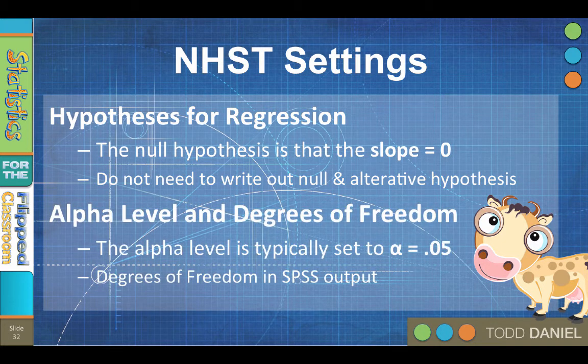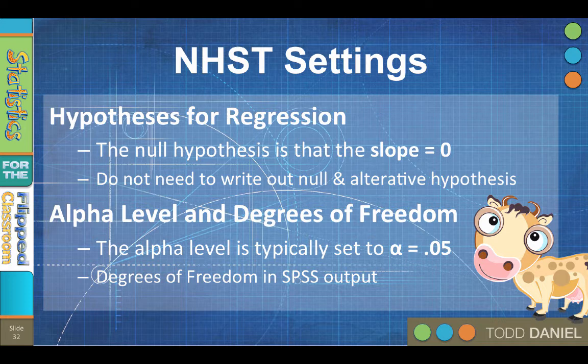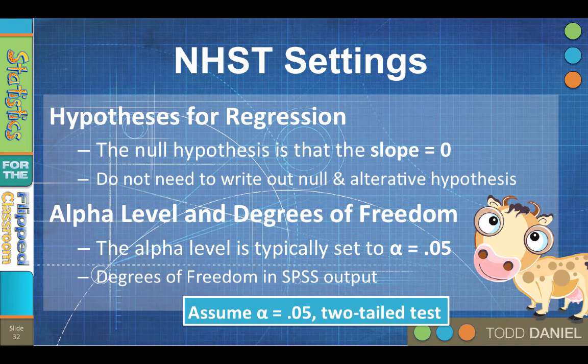The alpha level is typically set to 0.05, but it can be 0.01 or any other level that is chosen by you, the researcher. The regression model will be tested with an F-test, an ANOVA, to determine if the model predicts the outcome better than simply predicting based on the mean. The degrees of freedom are interpreted from the SPSS output, so just assume that the regression test is alpha equals 0.05 two-tailed test.